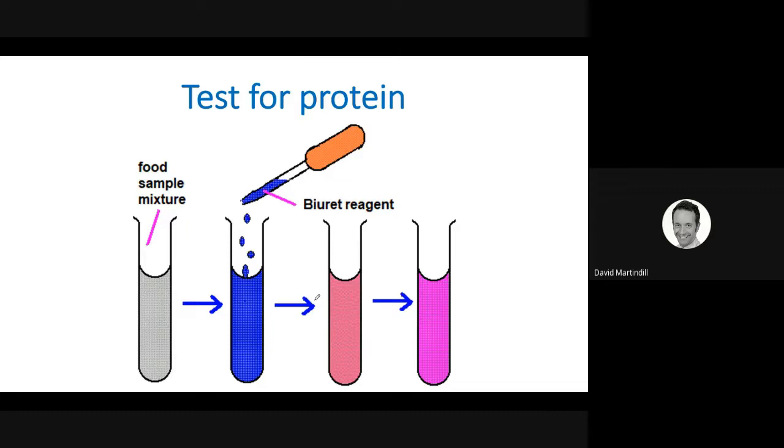Test for protein, you will use the biuret reagent. This turns purple in the presence of protein. It's blue to begin with, but turns purple if protein is present.